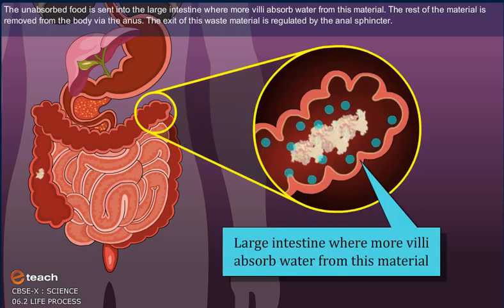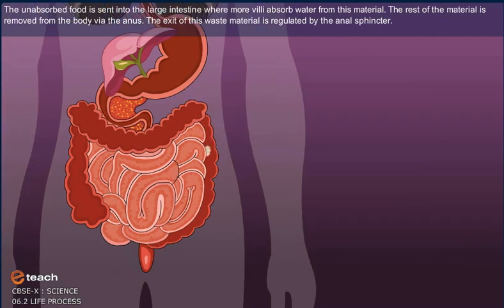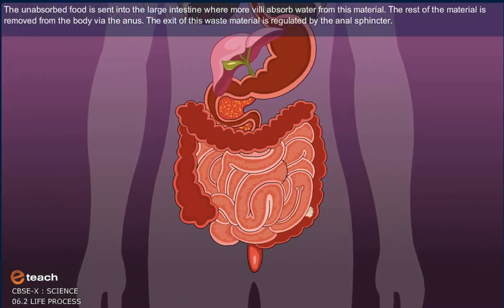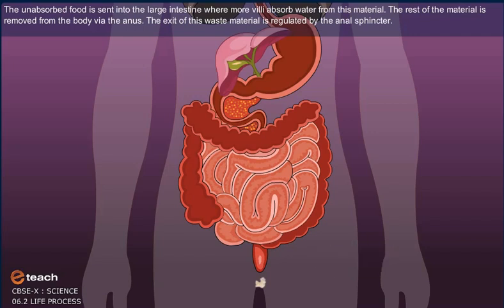The unabsorbed food is sent into the large intestine where more water is absorbed from this material. The rest of the material is removed from the body via the anus.